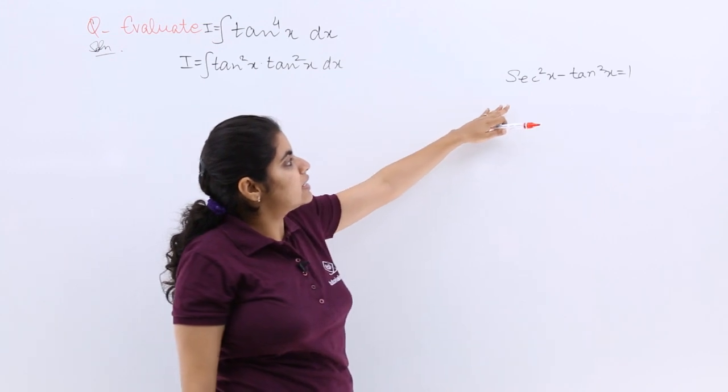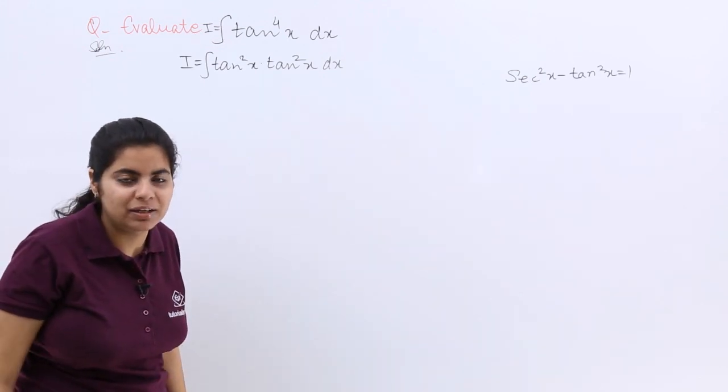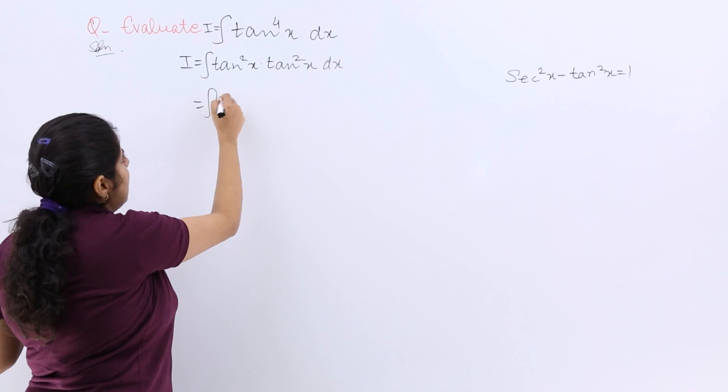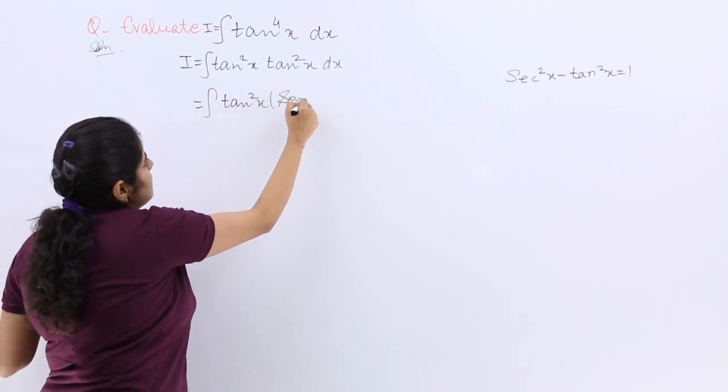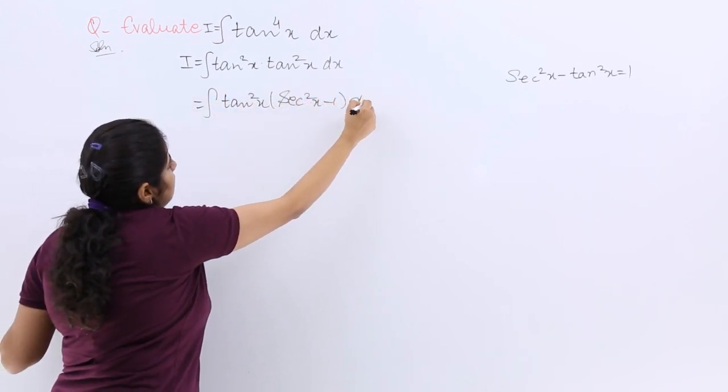Now what is tan square x? Nothing but secant square x minus one. So let me use that identity and I write it as secant square x minus one dx.